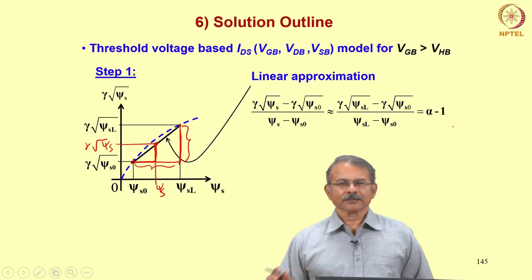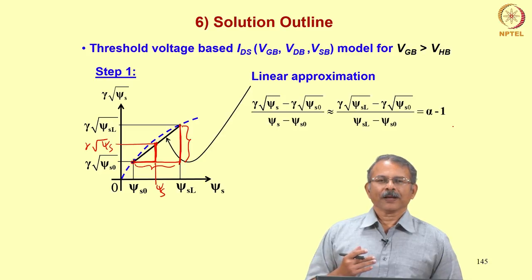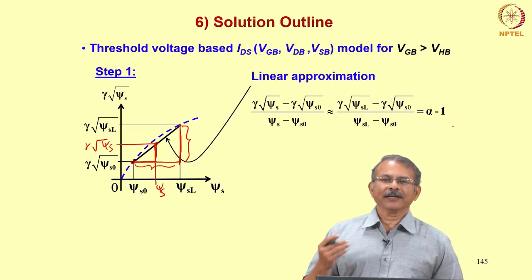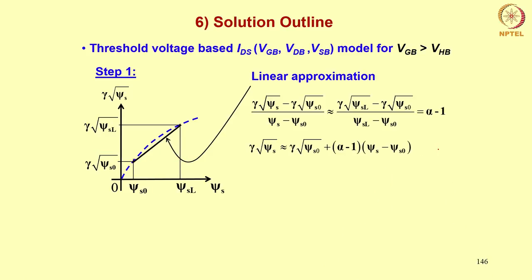Why do we call it α minus 1 and not α? We will find that if you call it α minus 1, the final expression will turn out to be simpler. So we can use this and write γ√ψs as shown here. Taking this part and equating it to α minus 1 gives you this. This tells you how to actually evaluate α minus 1 based on values of ψsL, ψs0, and so on.